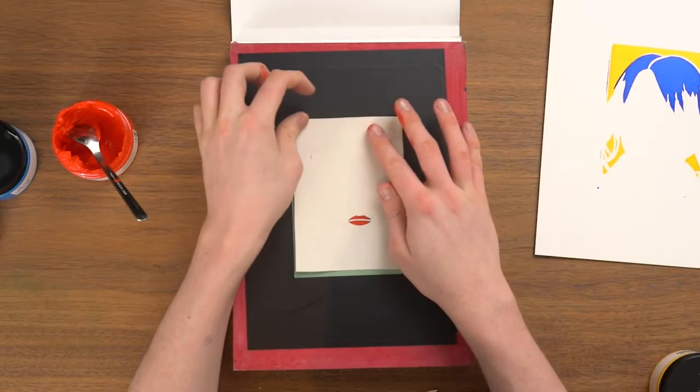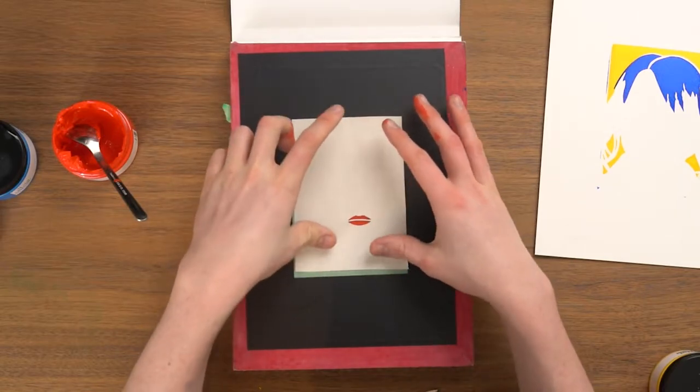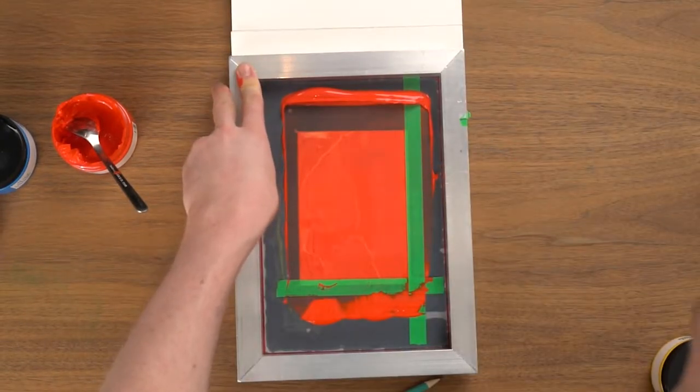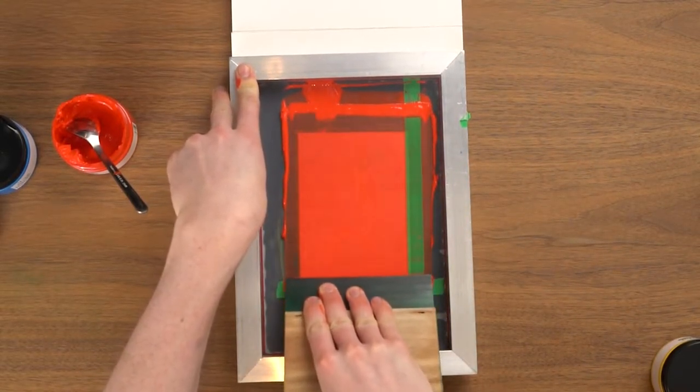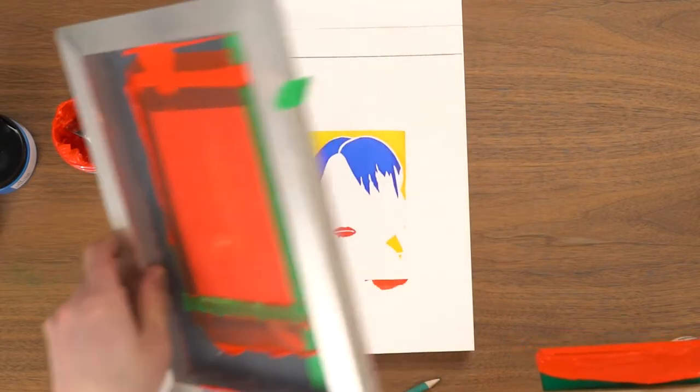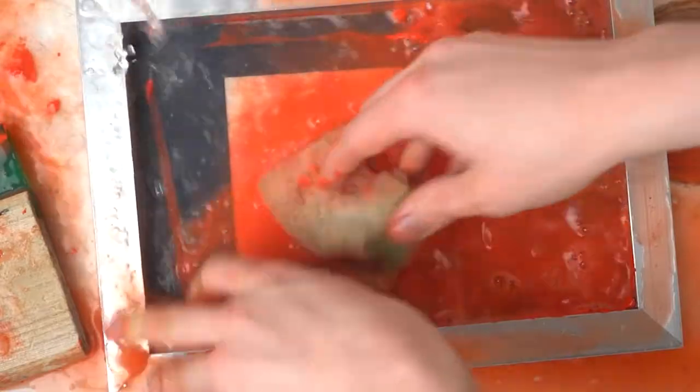Three, flip the screen. Four, stick the stencil, making sure it's lined up to our printing area. And five, flip the screen again on top of our yellow and dark blue. And using the squeegee blades to pull the paint towards yourself. And there's another layer done and another trip to the sink.